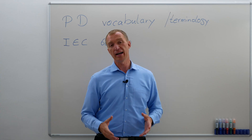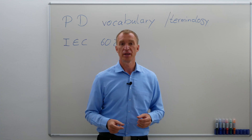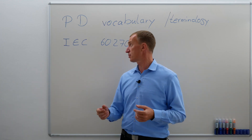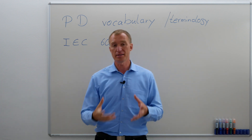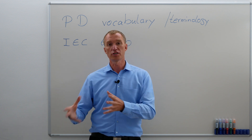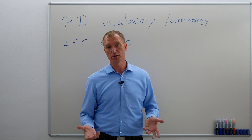We also have the IEC, and here as well is a short list of some of the standards — it's not complete. There are standards about testing partial discharges on cables, on rotating machines, on transformers. The majority of these standards actually refer to the IEC 60270, which is a standard that only deals with partial discharge testing and defines a lot of the vocabulary we are using.